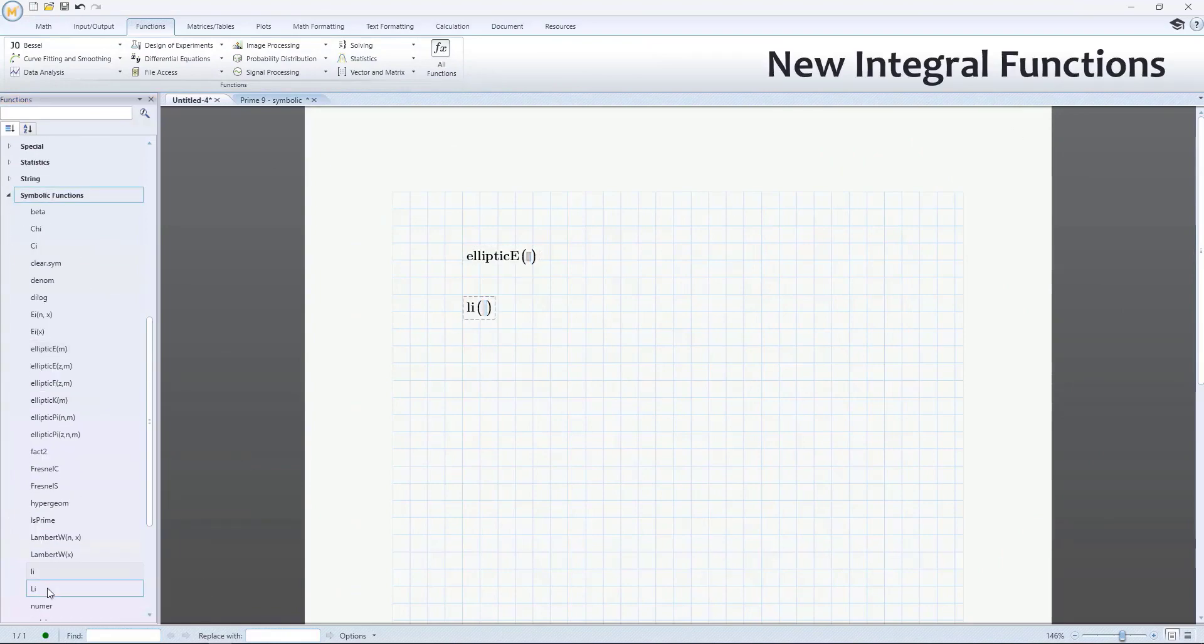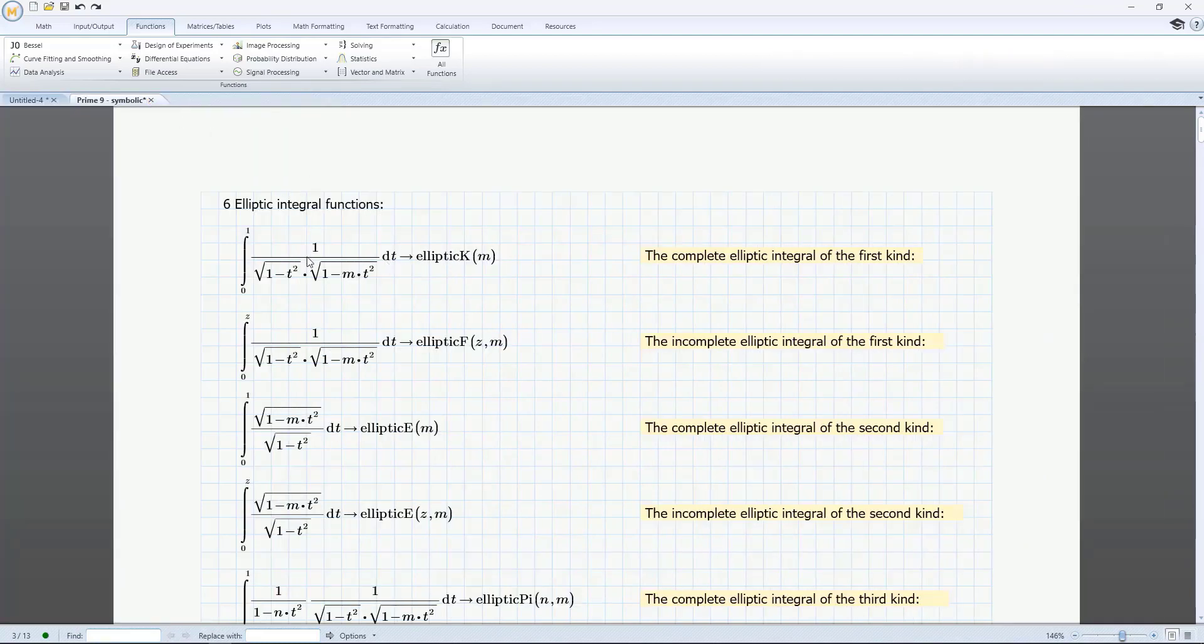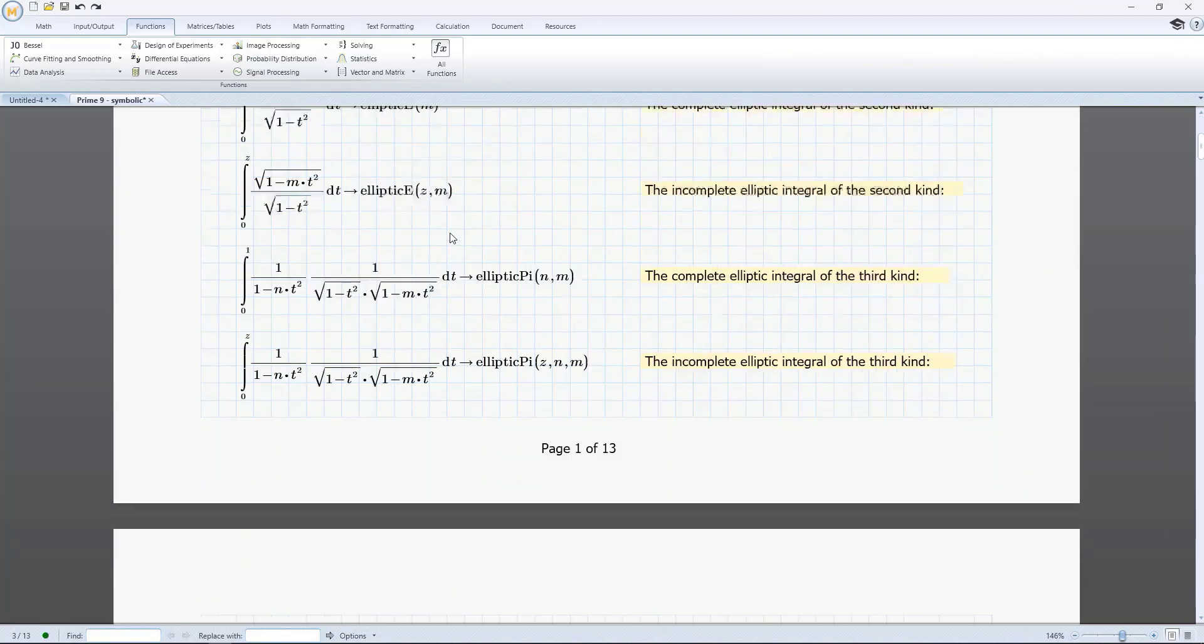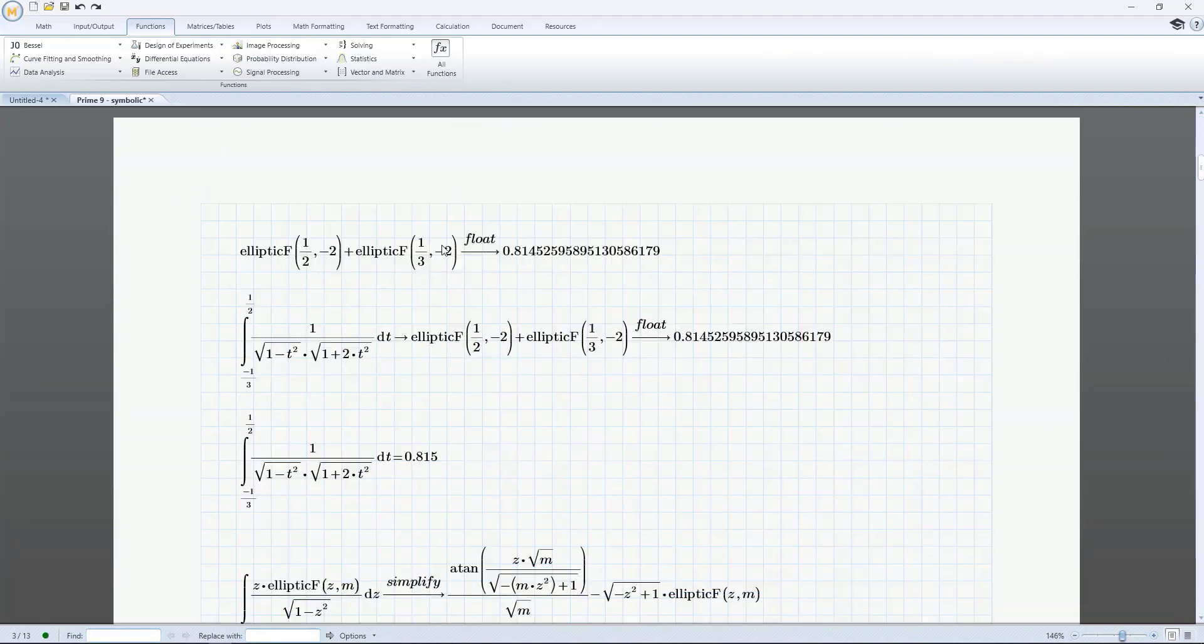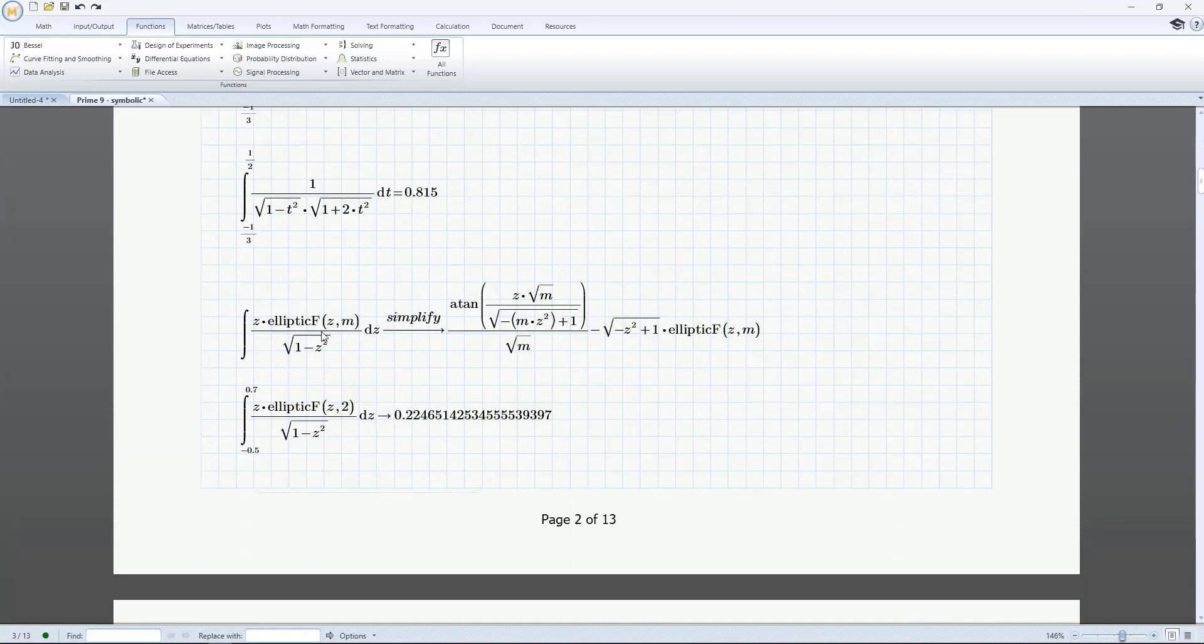In PTC MathCAD Prime 9, you will find two new types of symbolic integral function. Elliptic integral functions are useful in many computational problems, including electromagnetism and gravitation. There are six elliptic integral functions in PTC MathCAD Prime 9, the complete and incomplete forms for the first, second and third kind.